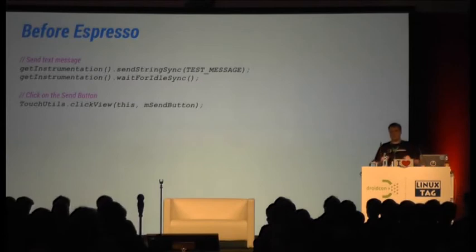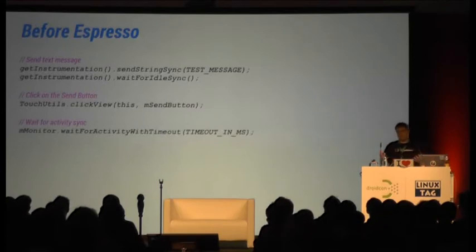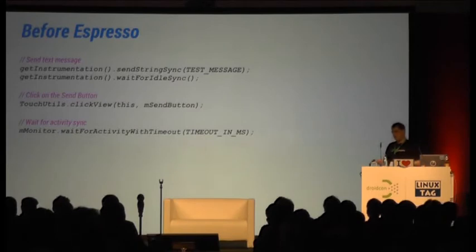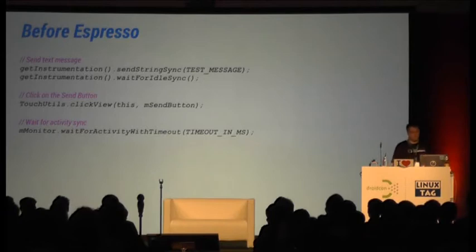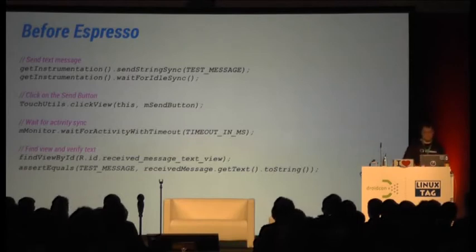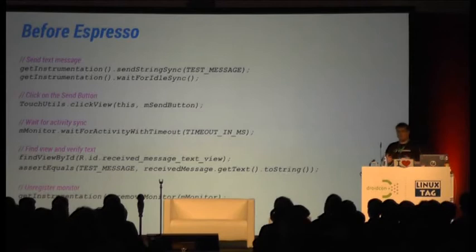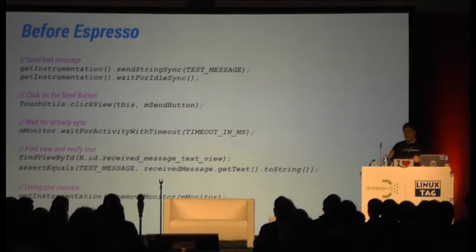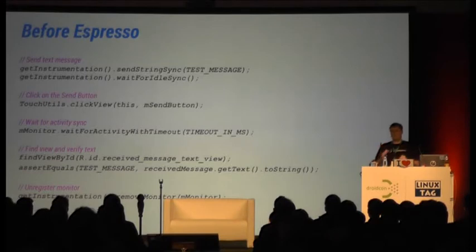Now we're ready to click on the button and send the text to the next activity. We then expect the next activity to come up, so we have to wait again — call waitForActivity with a timeout to basically wait for the next activity to come up. If it comes up, we can find our view, make our assertion that the text is displayed, and then remove the activity monitor. Even leaving out some bits, this is still a lot just to make the test 100% reliable.